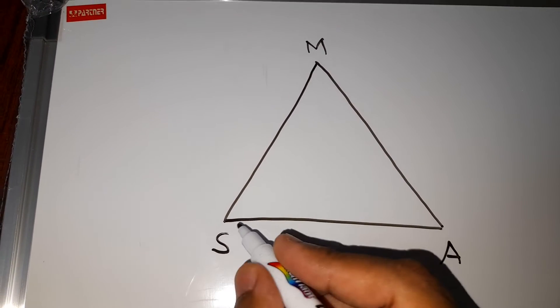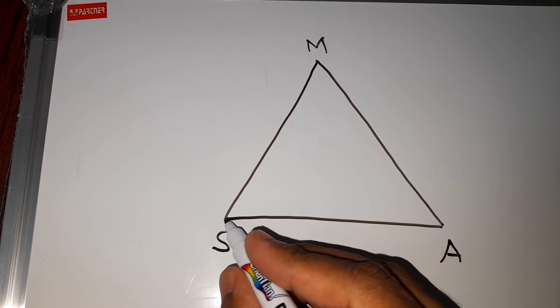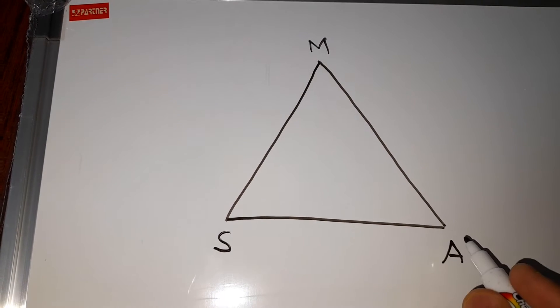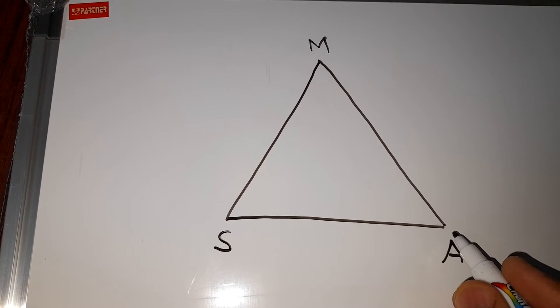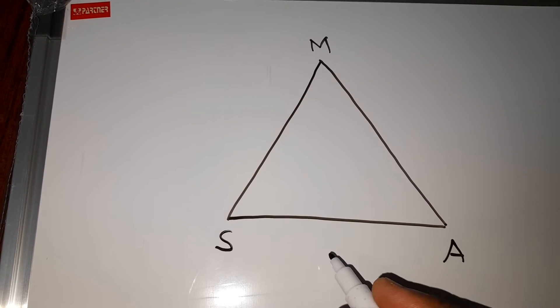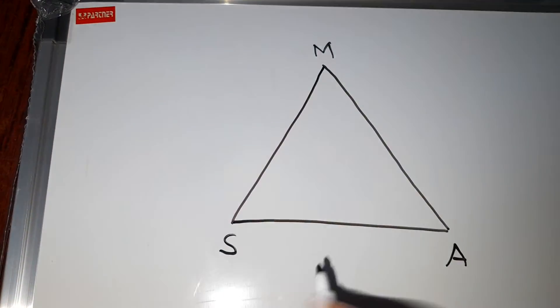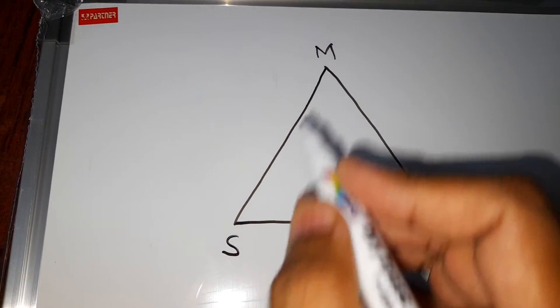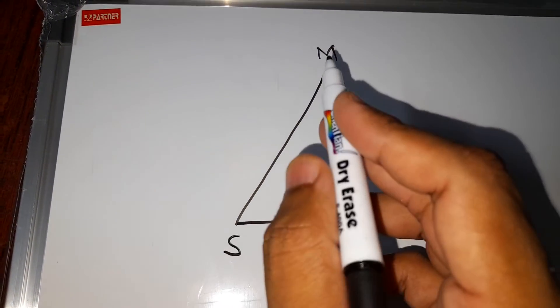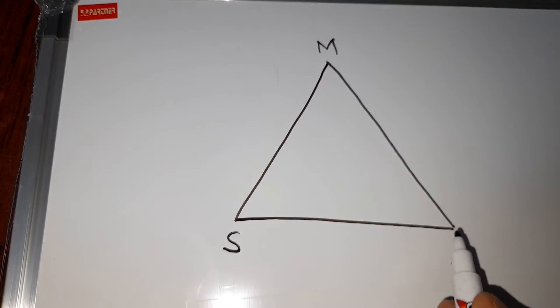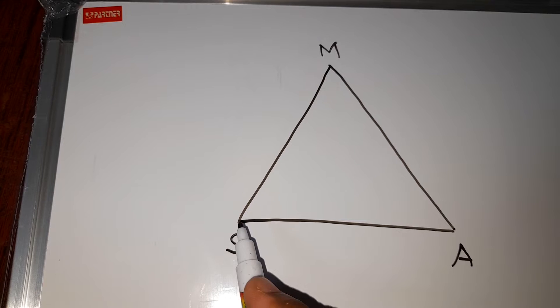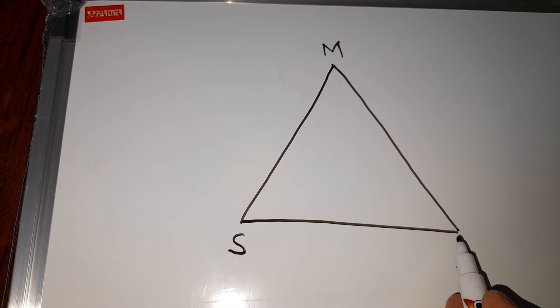We will just find the circumcenter in this case, that is the toy shop. For finding the circumcenter, we need to make the perpendicular bisector of all the sides. When we make the perpendicular bisector of all three sides, the meeting point of all three perpendicular bisectors is the circumcenter. So let us start — first we will use side SA.